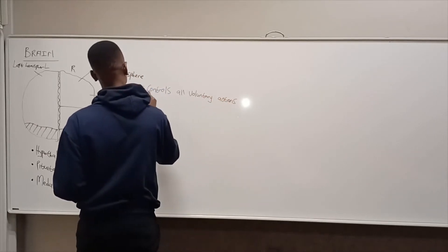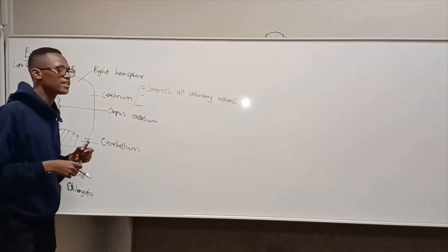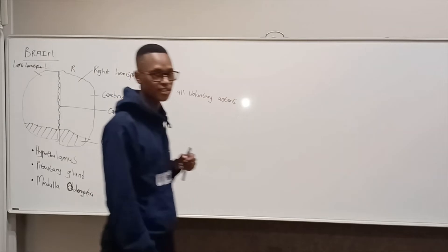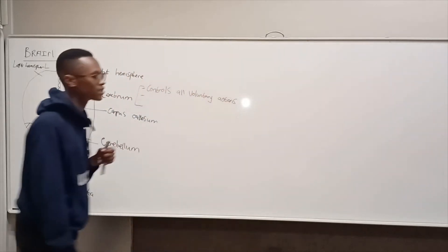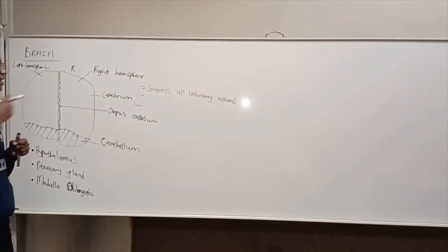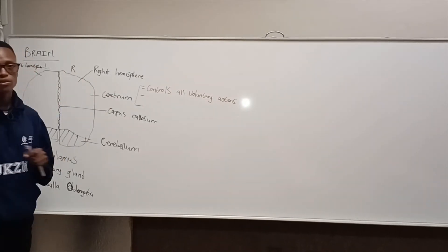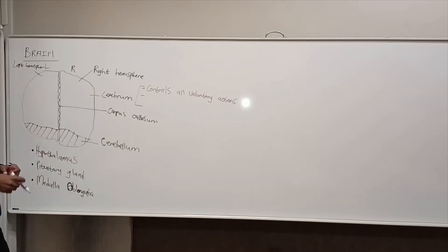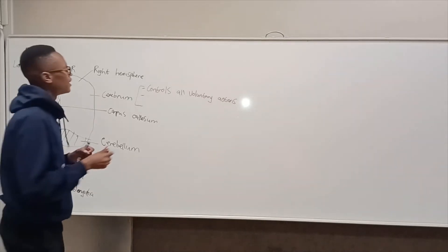The cerebrum controls all voluntary actions. Voluntary actions are actions that we consciously decide to do. For example, when I walk, I have decided to walk. When I talk, it is a conscious decision. When I write on the whiteboard, I'm choosing to do it — no one is forcing me. Those are voluntary actions controlled by the cerebrum.